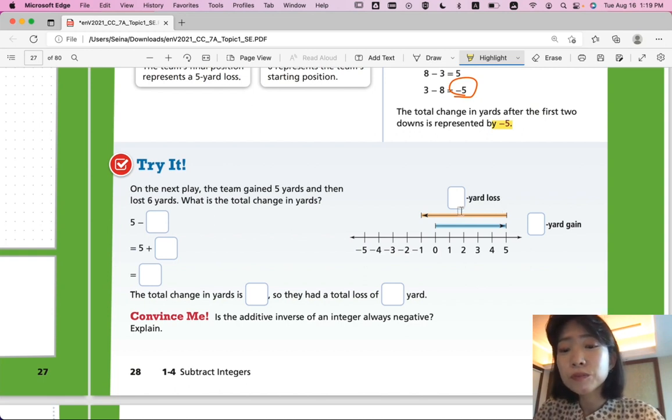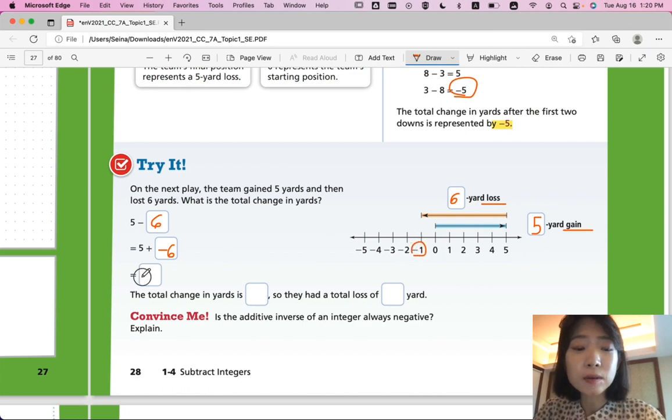Okay, are you ready? Look at the number line here. The team gained 5 yards and then lost 6 yards. So what does it go first? For gain, they earned 5 yards. For the loss, they lost 6 yards. So the subtraction equation would be positive 5 minus 6. And change that into an addition, you can have 5 plus negative 6. And so if you add them up, you will end up with negative 1. So the total change in yards is negative 1.